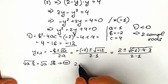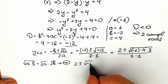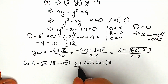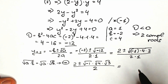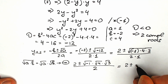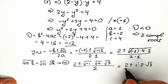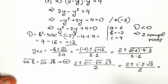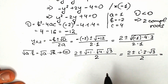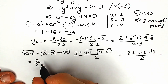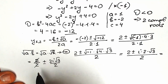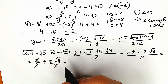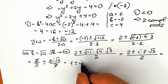So we have 2 plus or minus square root of minus 1 times square root of 4 times square root of 3, all over 2. Now, square root of minus 1 is our imaginary unit i, square root of 4 equals 2, giving us 2 plus or minus 2i times square root of 3, all over 2. Dividing by 2, our answer is 1 plus or minus i times square root of 3.